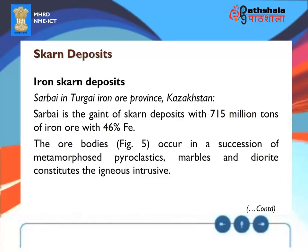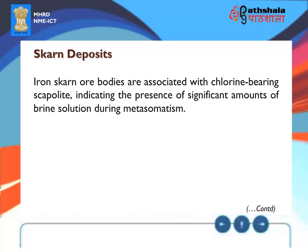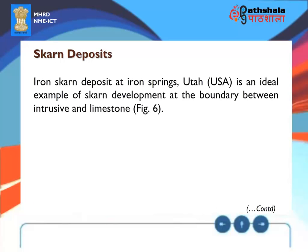Iron skarn deposits: Sarbai, in the Turgai iron ore province, Kazakhstan, is the giant of skarn deposits, with 715 million tons of iron ore at 46% iron. The ore bodies (Figure 5) occur in a succession of metamorphosed pyroclastics, marbles, and diorite as the igneous intrusive. Iron skarn ore bodies are associated with chlorine-bearing scapolite, indicating the presence of significant amounts of brine solution during metasomatism. The iron skarn deposit at Iron Springs, Utah, USA, is an ideal example of skarn development at the boundary between an intrusive and limestone (Figure 6).